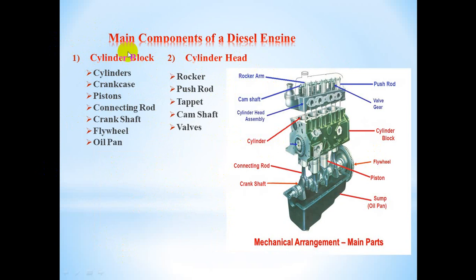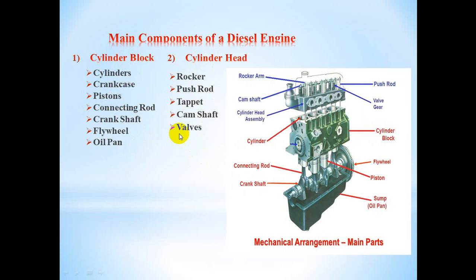The cylinder block consists of the following parts: cylinder, crankcase, piston, connecting rod, crankshaft, flywheel, and oil pan. The cylinder head consists of: rocker, push rod, tappet, camshaft, and valve.